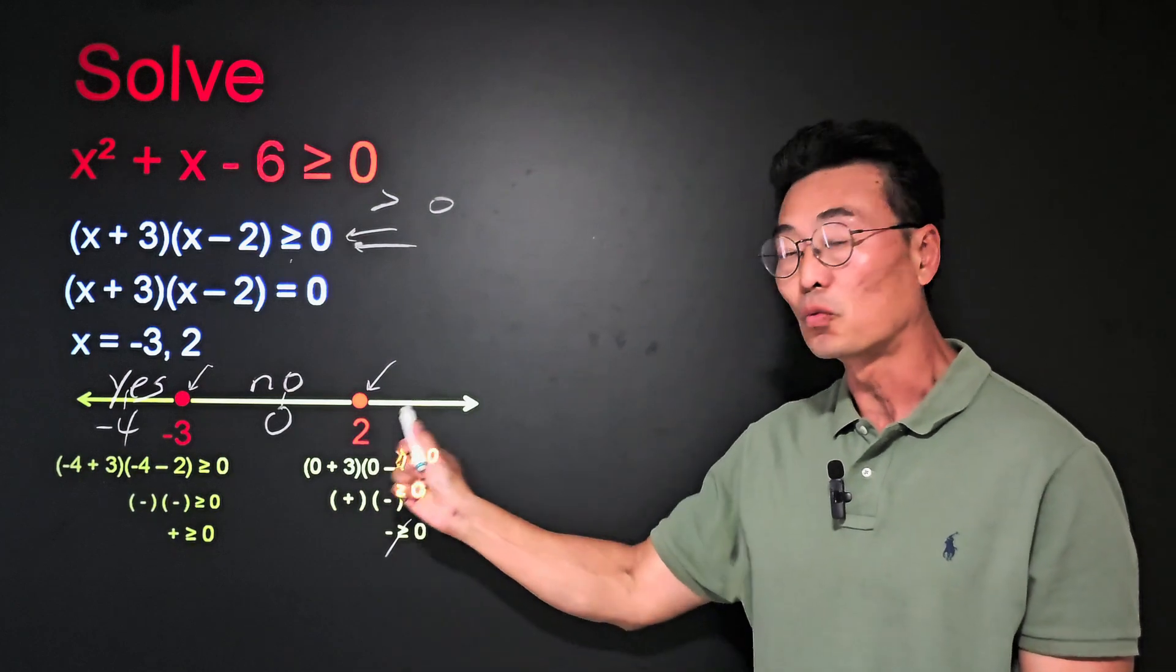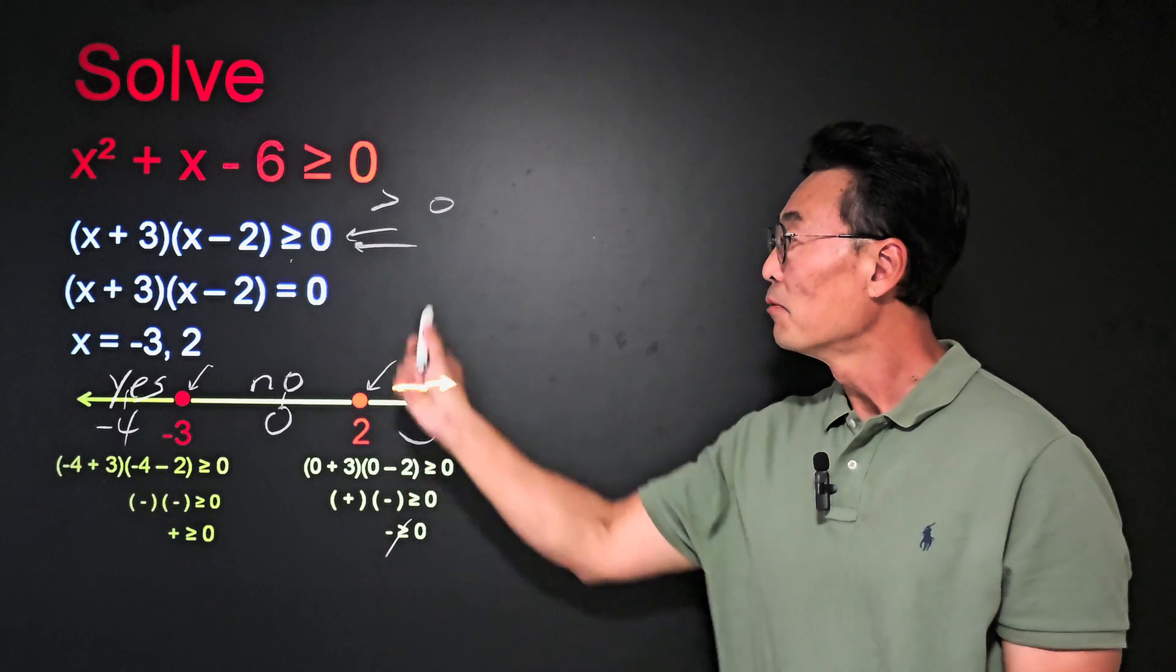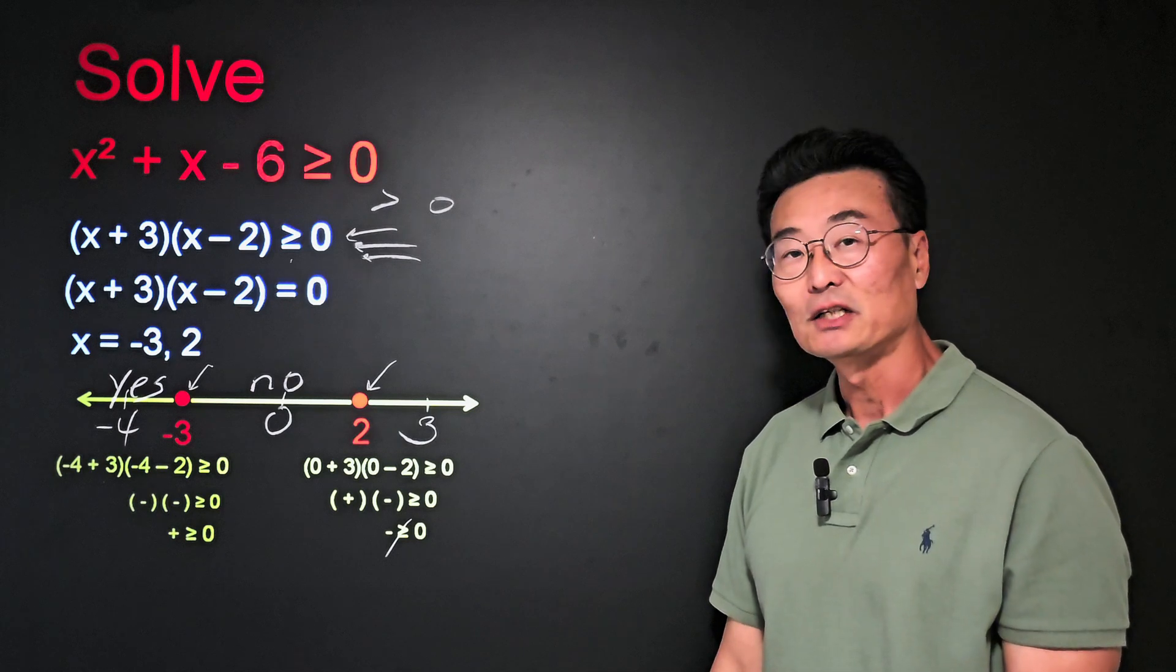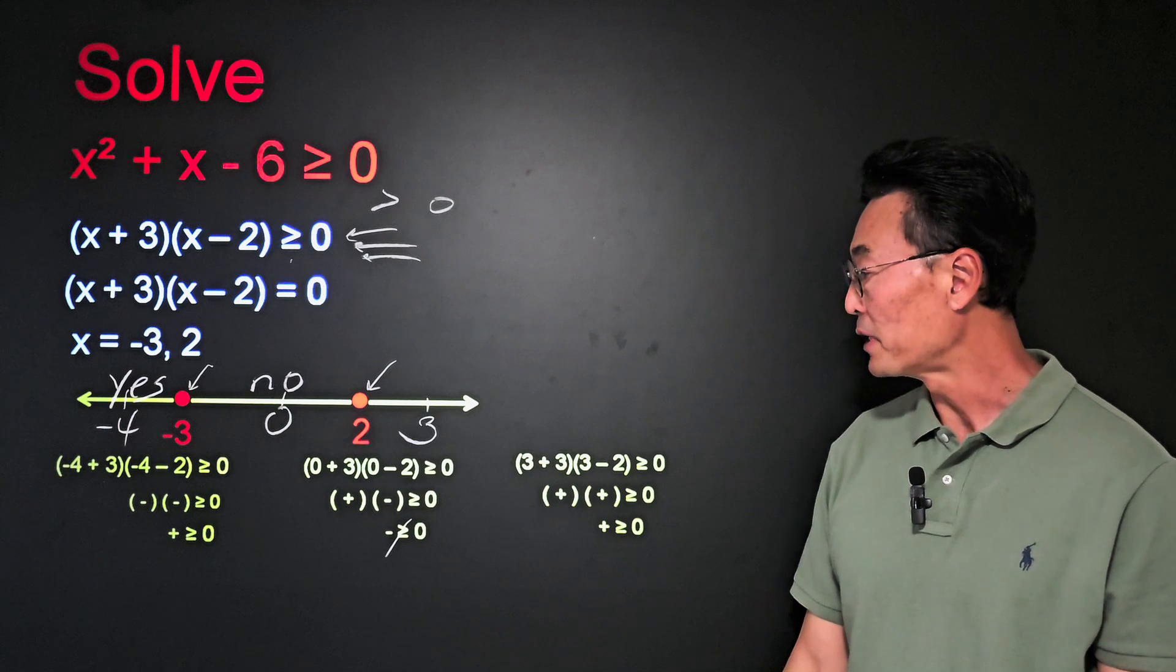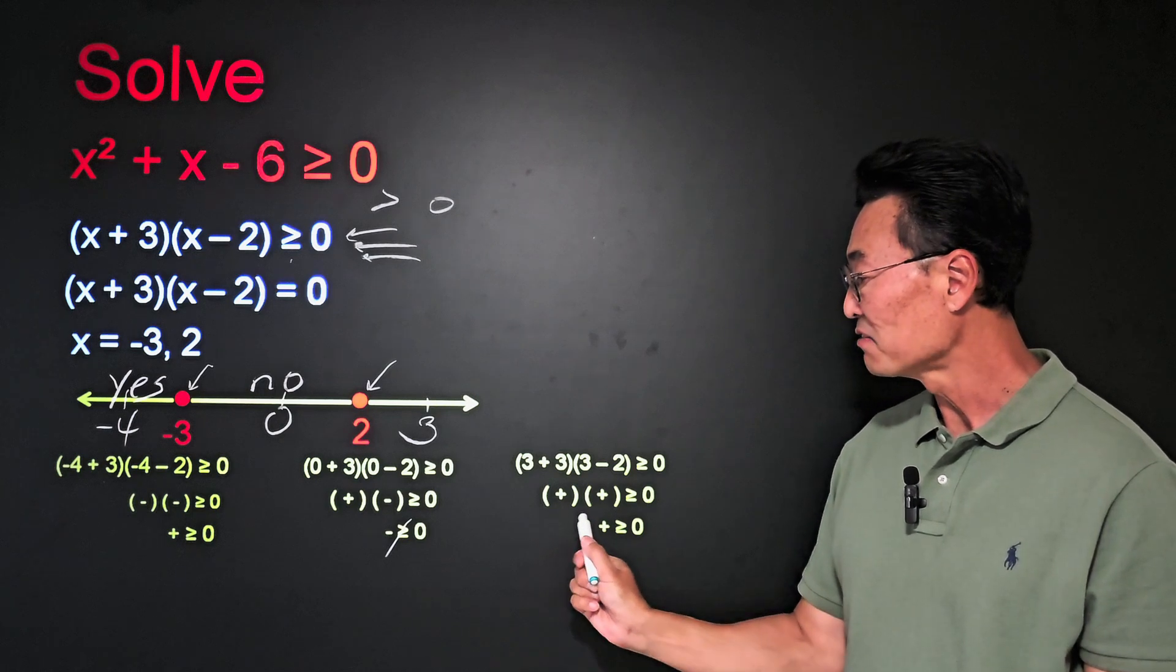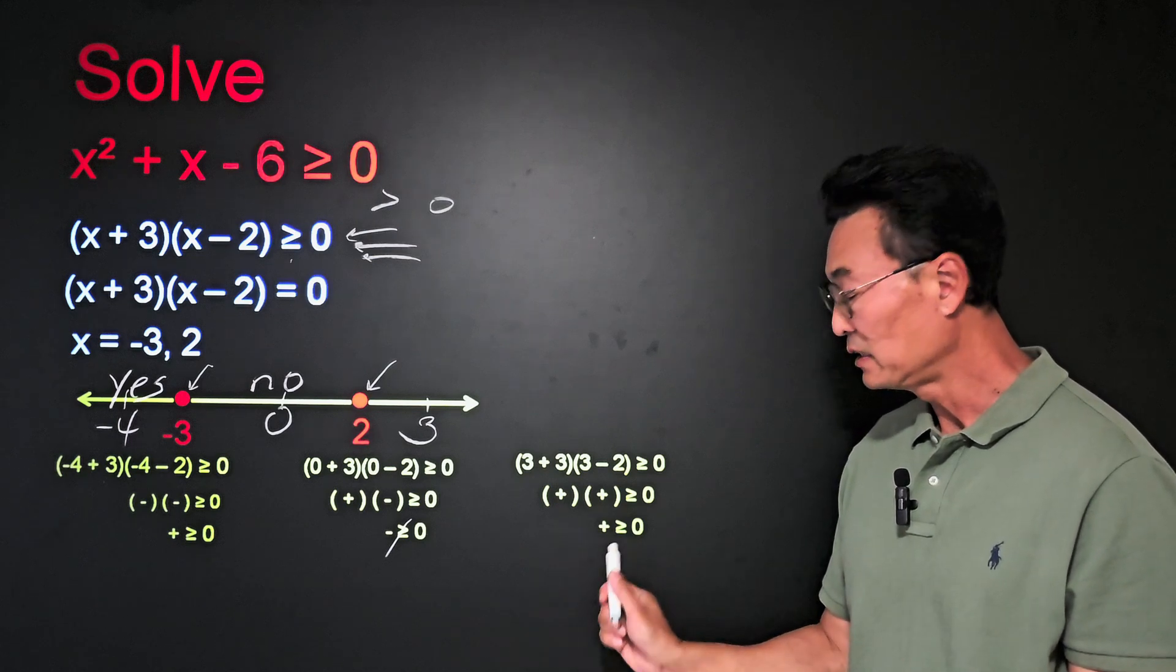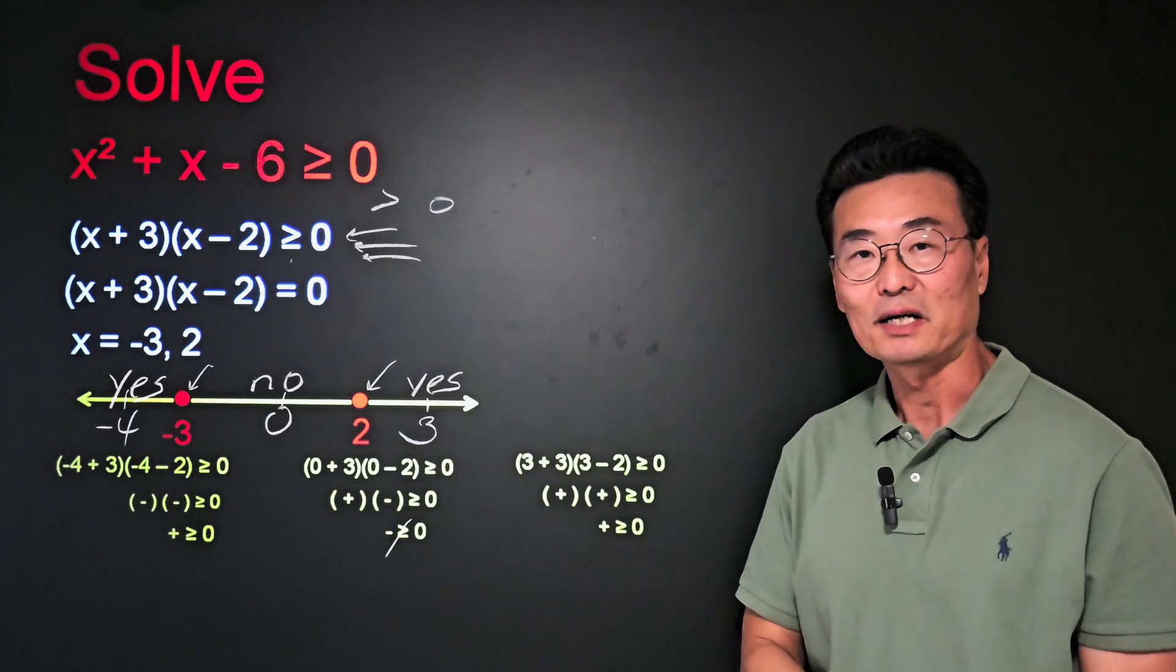And then finally, let's pick a number on the right side of the 2, such as 3. Again, plug it into the factor form of the quadratic inequality, where we get 3 plus 3 times 3 minus 2, and it's going to be positive times positive, which is positive, and it's greater than 0. So I'm going to put the word yes right here.